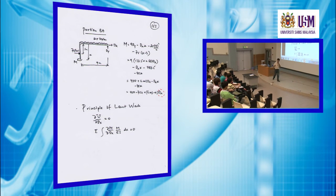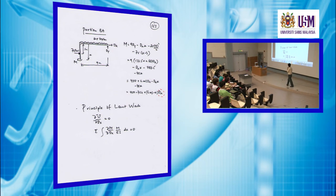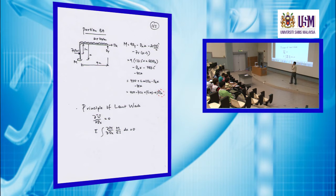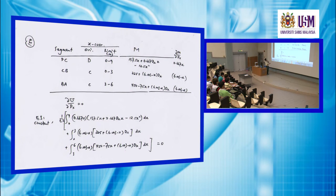For this problem, the equation to use is: according to the principle of least work, the partial derivative of strain energy with respect to the redundant DX must equal zero. Because this is a bending problem, you have to partially differentiate the bending moment equation with respect to the redundant DX, multiply by M divided by EI, and integrate. This table helps you summarize: the X coordinate limits, the bending moment M, and ∂M/∂DX for each portion. You need ∂M/∂DX — these terms — to substitute into the integral.